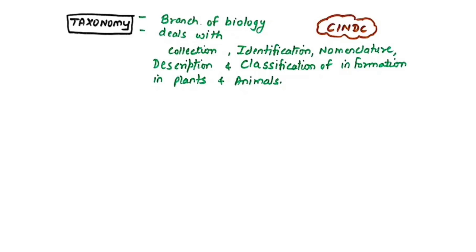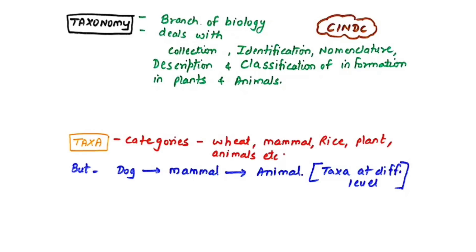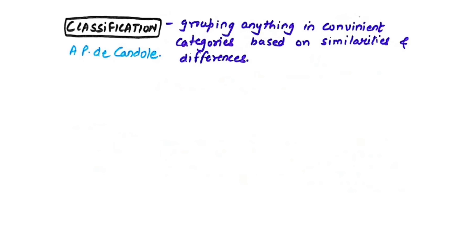Taxa are the categories used in classification — for example, wheat, mammal, rice, plant, animals. A dog is a mammal and also an animal, so it belongs to different taxa at different levels. These are called concrete units of classification.